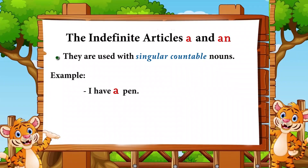Pen is a countable noun and also a singular noun. Similarly, 'She has an umbrella.' Umbrella is a countable noun and also a singular noun, so we can use the indefinite article here: 'She has an umbrella.'